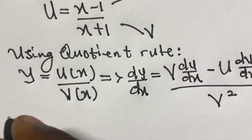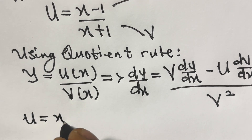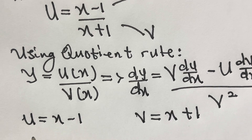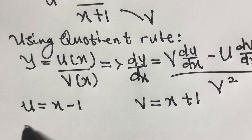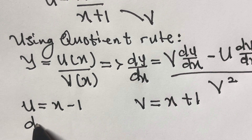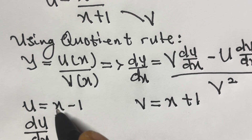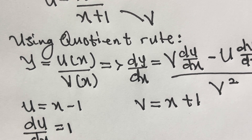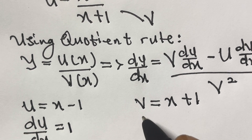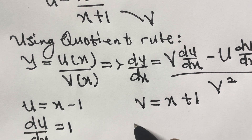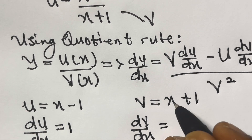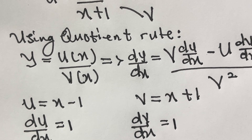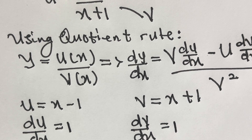Now we have u equals x minus 1, and v equals x plus 1. Differentiating u with respect to x: du/dx equals 1, since the differential of x is 1 and the differential of the constant 1 is 0. Similarly, dv/dx equals 1.